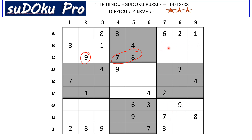Considering 9, 7, and 8 go here, the remaining numbers in this block are 4, 5, and 3. We have 3 in column 8 and 3 in column 7 blocking those two cells, so 3 goes in C9. Now 4 and 5 go in these two cells, but we do not have any clues for 4 and 5 — we need to keep that in mind.